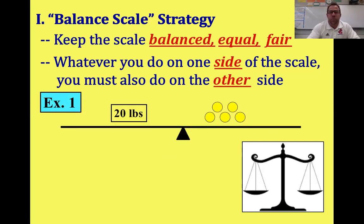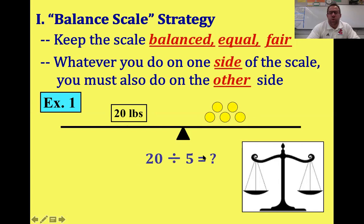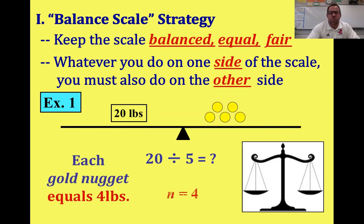Let's go ahead and try this example. We have 20 pounds of weight, like a weight room 20-pound plate, on the left side of our scale, and over here we have five gold nuggets. We don't really need to take anything off the scale — we only have gold nuggets on one side and weight on the other. The goal is to figure out how much does one gold nugget weigh. We could do 20 divided by five, and each gold nugget is going to weigh four pounds. We write n equals four.